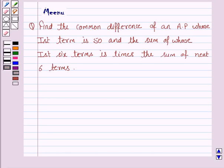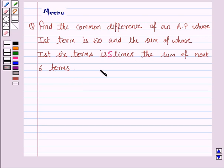Hello and welcome to the session. Let's work out the following problem. Find the common difference of an AP whose first term is 50 and the sum of whose first 6 terms is 5 times the sum of the next 6 terms. Let's now move on to the solution.